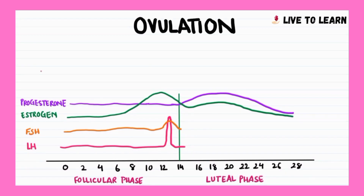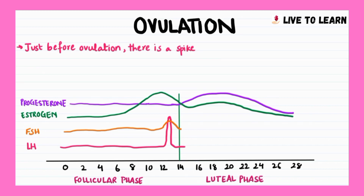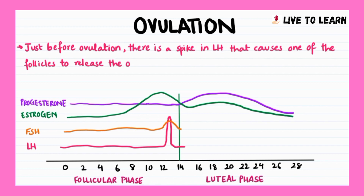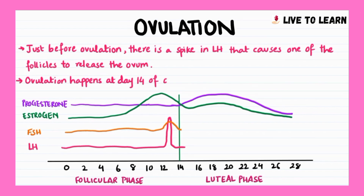Ovulation occurs on the 14th day of a 28-day cycle, and just before ovulation there is a spike in LH that causes one of the follicles to release the ovum. FSH is released at the start of the menstrual cycle and promotes follicular development, with a slight spike just prior to ovulation. Estrogen is released by the developing follicles, and it gradually rises then falls just before ovulation as the follicle prepares to release the egg.